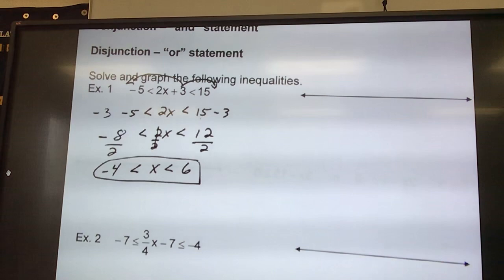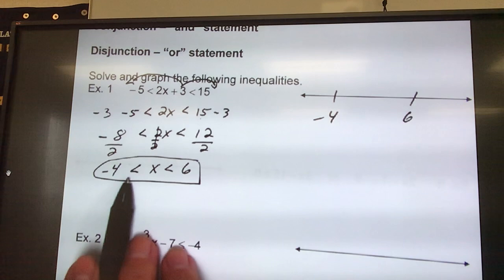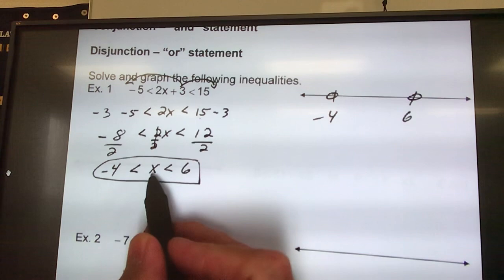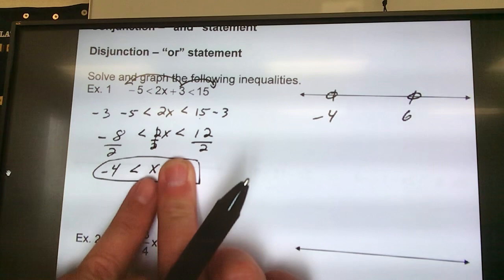Now I have to take this and put it on the number line. Obviously, negative 4 comes first, and then 6 comes next. I look at my inequality. There is no equal to sign underneath it, no line under it, so I know it's an open circle at the 4. Same deal on the side of the 6. There is no line underneath, so it's an open circle, which means it does not include those points.